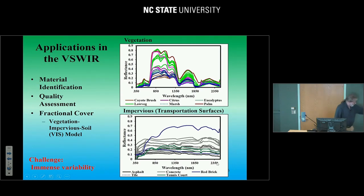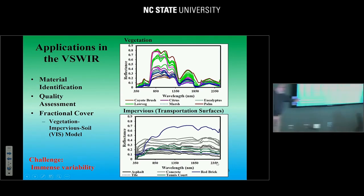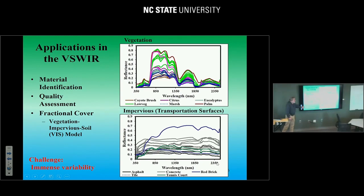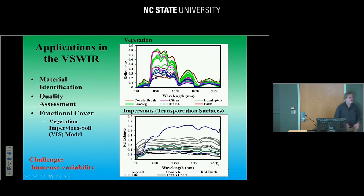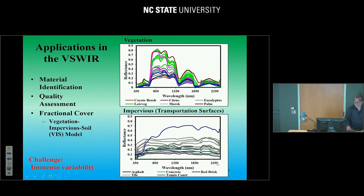There's also the challenge of immense variability. If you're going to create a VIS model, there is no such thing as one spectrum of a plant — there are hundreds of plant spectra. What is an impervious surface? It could be a red tile roof, an asphalt road surface, concrete — many things that are all spectrally distinct. So you need to account for that in whatever model you approach.